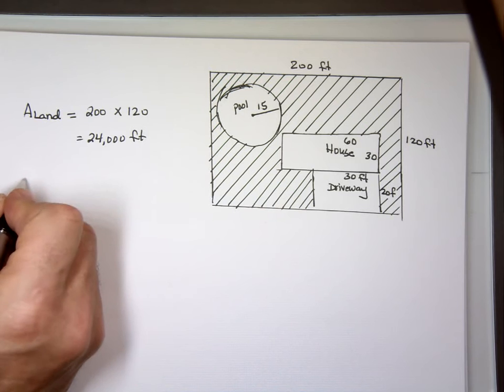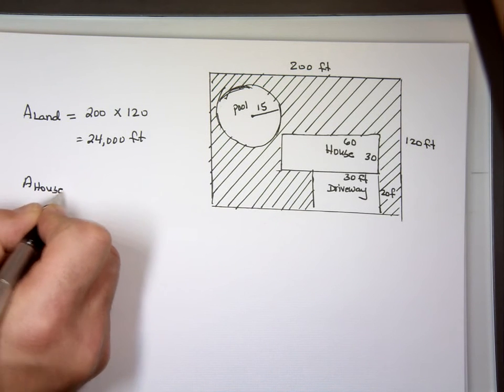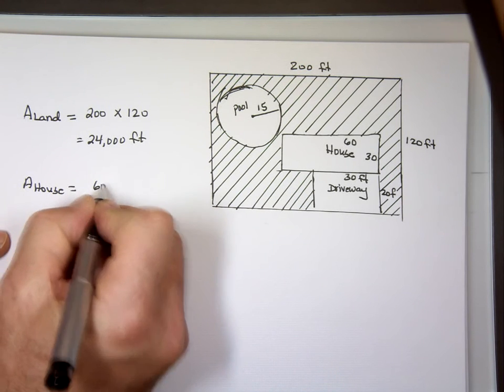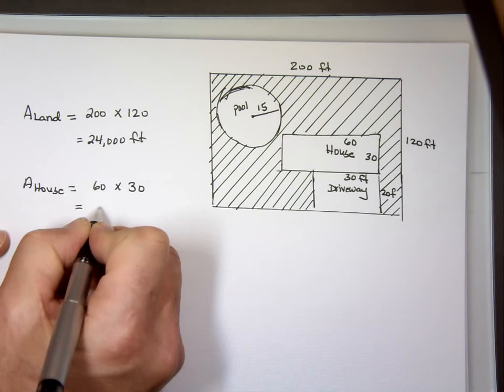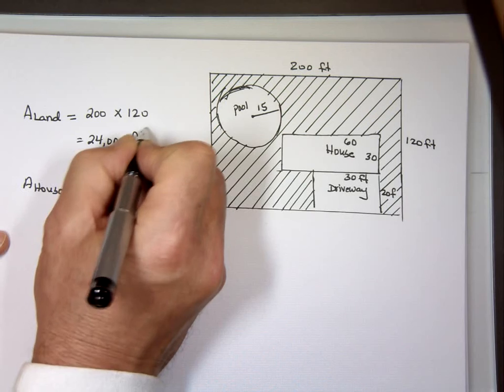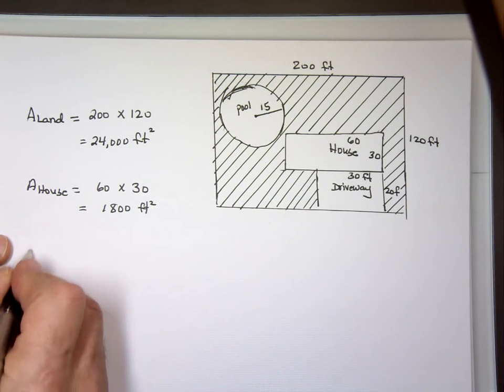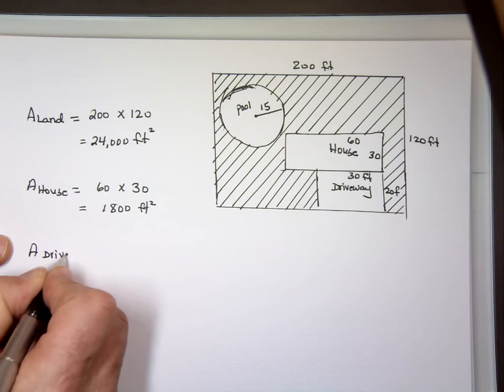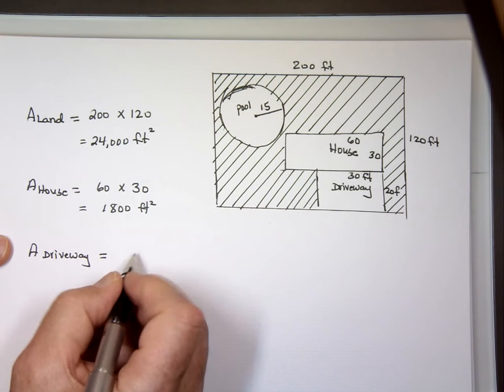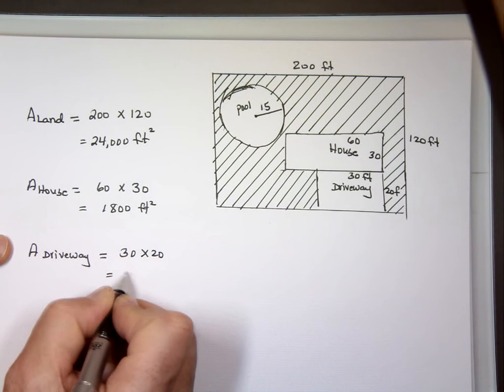Let's look at the area of the house. What shape is the house? Rectangle, so it's length times width. 60 times 30, which is 1,800 square feet. Area of the driveway, again rectangular shape, length times width. 30 times 20, which is 600 square feet.